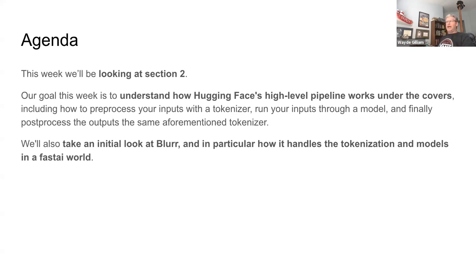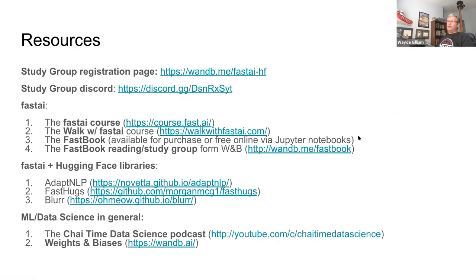And then we'll also take a look at Blur. There are at least three fast.ai Hugging Face integration libraries. Blur is one of them — that's the one I created. We'll look at how it handles tokenization and models in a fast.ai world. And then next week we're going to be looking at all three frameworks, with folks presenting a demo using the same dataset and task, so you can get an idea of the design decisions as well as how they work, and you can choose one or more to use in your own work.